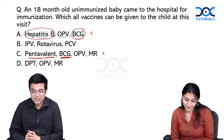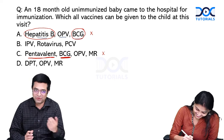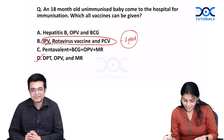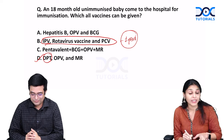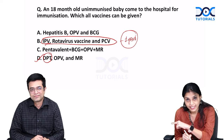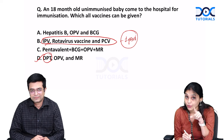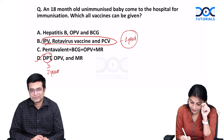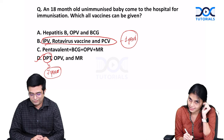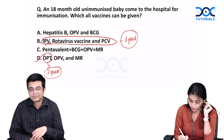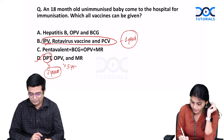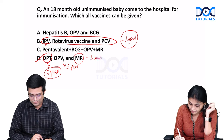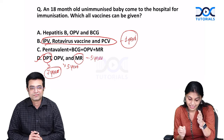We are left with option D, which is the correct answer. DPT can be given - if an unimmunized child comes after one year, do not give pentavalent; give DPT instead. DPT can be given up to seven years. OPV can also be given up to five years. MR vaccine can also be given up to five years. So option D is correct.